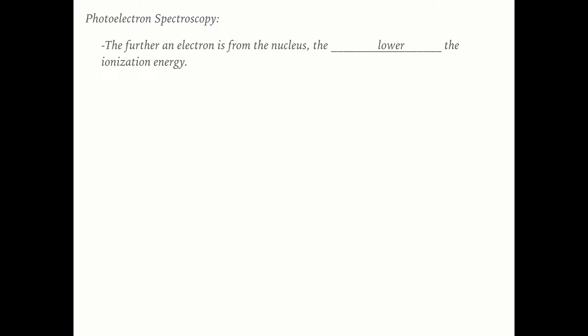As a review, the further an electron is from the nucleus, the lower its ionization energy is going to be, and so we use that fact in order to look at this graph.